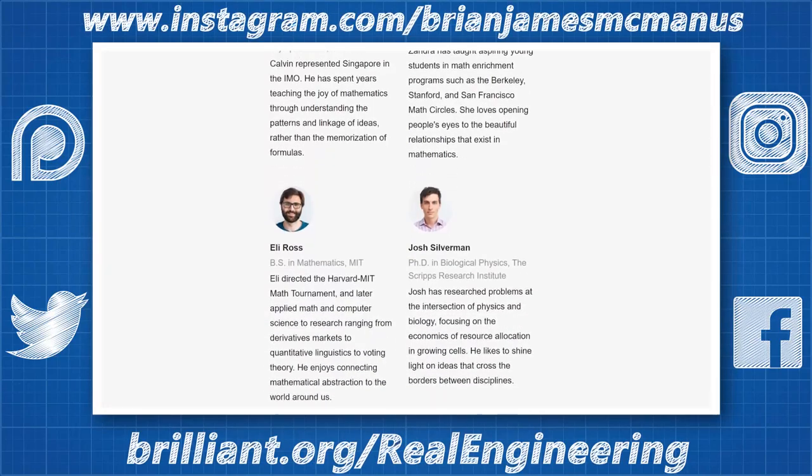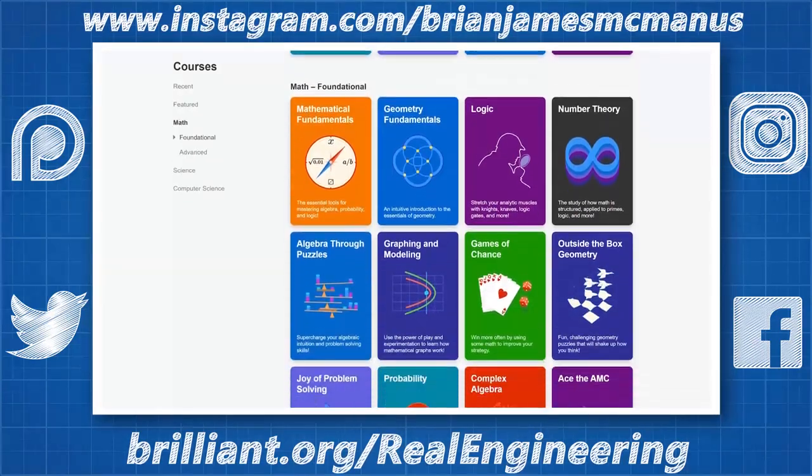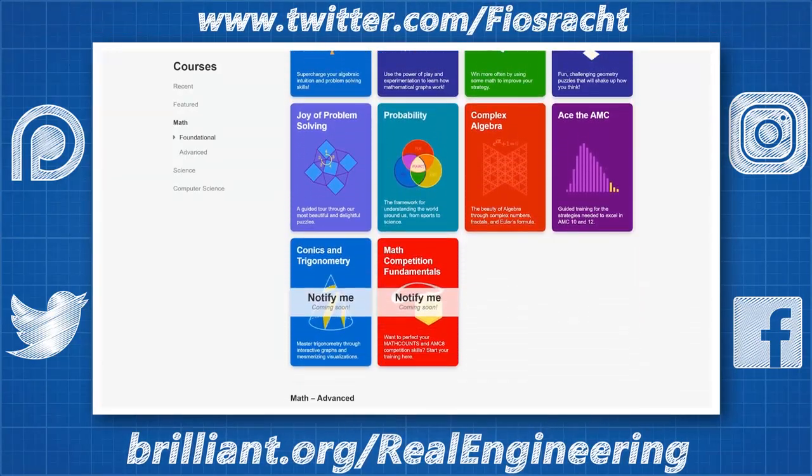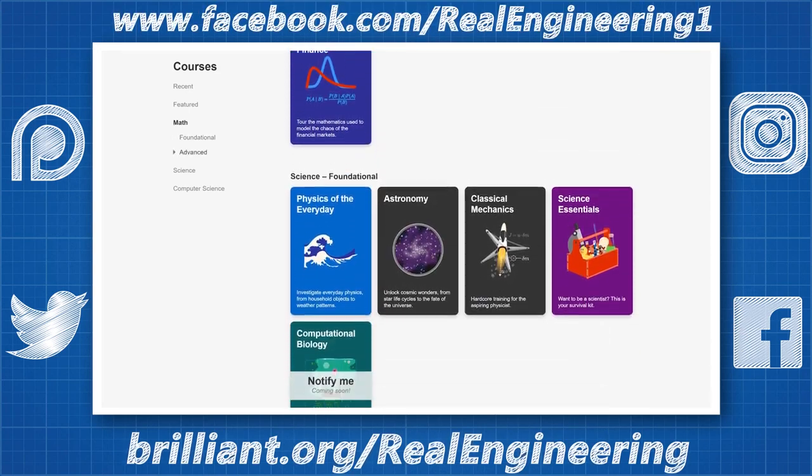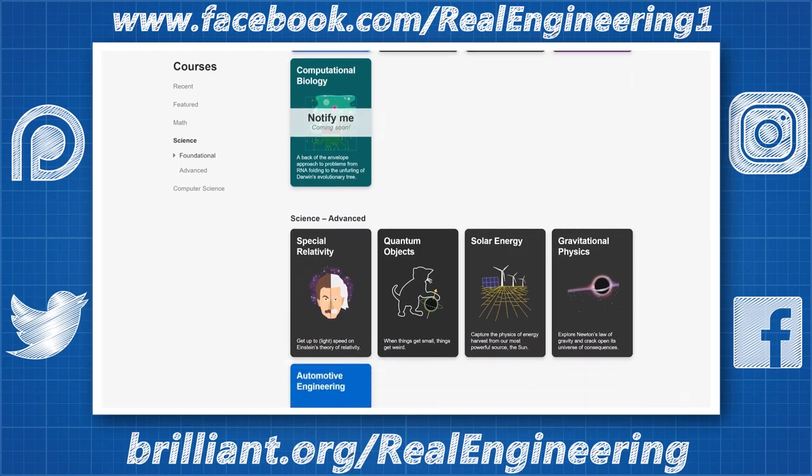To support Real Engineering and learn more about Brilliant, go to brilliant.org forward slash real engineering and sign up for free. The first 73 people to sign up with this link will get 20% off their annual premium subscription.